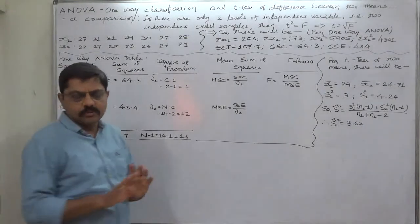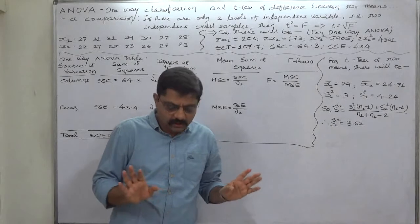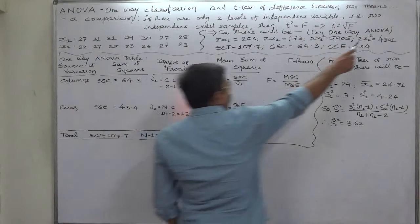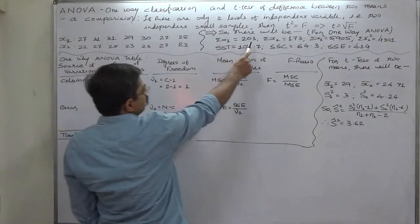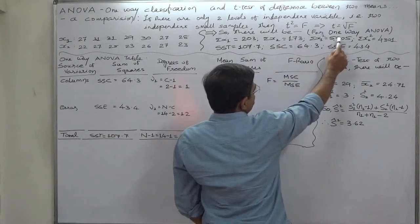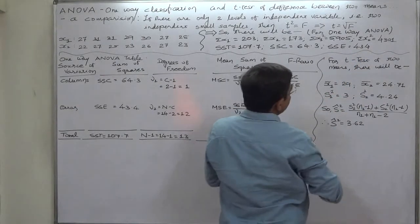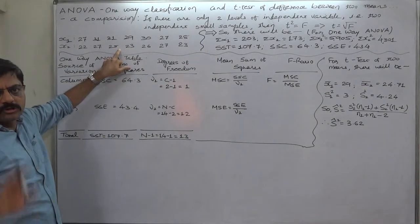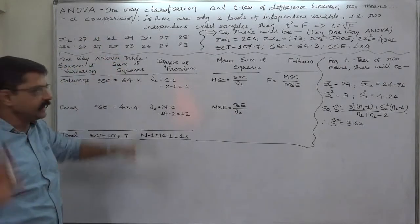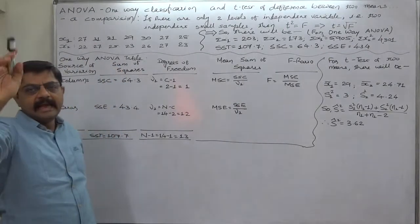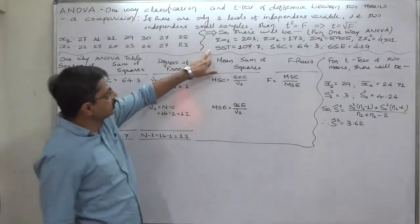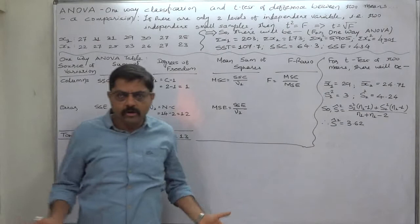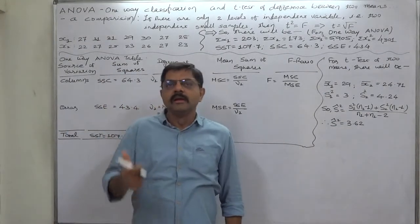In the case of one-way ANOVA the concluding result is the F ratio, and in the case of the T-test for difference between two means it is the T statistic. We are going to compare only these concluding results. On the basis of columns x1 and x2 for one-way ANOVA we have: Σx1 = 203, Σx2 = 173, Σx1² = 5905, Σx2² = 4301. I have obtained all these results without coding — I have not subtracted anything. The final results are: SST = 107.7, SSC = 64.3, SSE = 43.4.